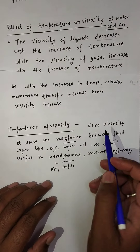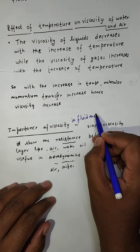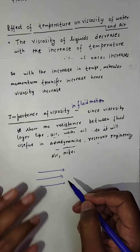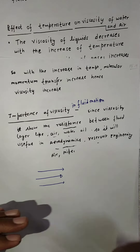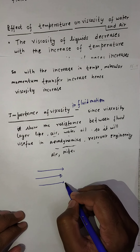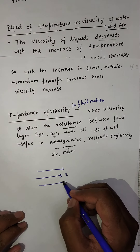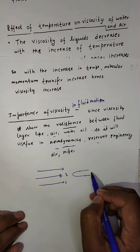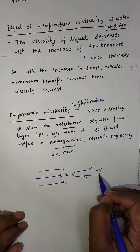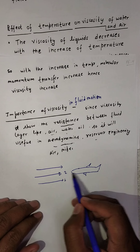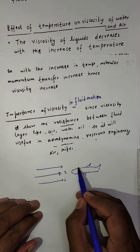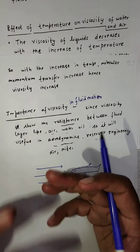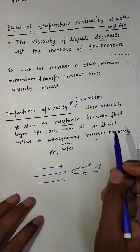The third point is the importance of viscosity in fluid motion. Viscosity represents the resistance between fluid layer and layer. When a fluid is moving, there is resistance between adjacent layers, and the distance and resistance between two layers is described by viscosity. For aerodynamic shapes like planes or missiles, this resistance creates friction and heat.